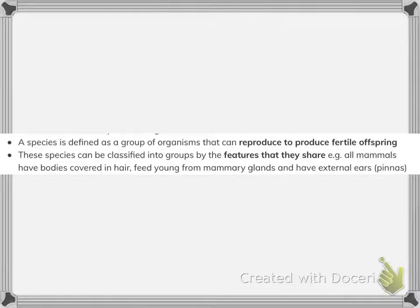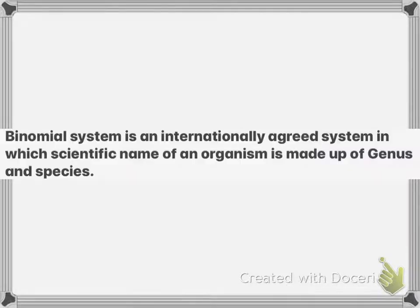Species are groups of organisms that reproduce to produce fertile offspring. Species can be classified by the features they share. The binomial system is an internationally agreed system in which the scientific name of an organism is made up of the genus and species.